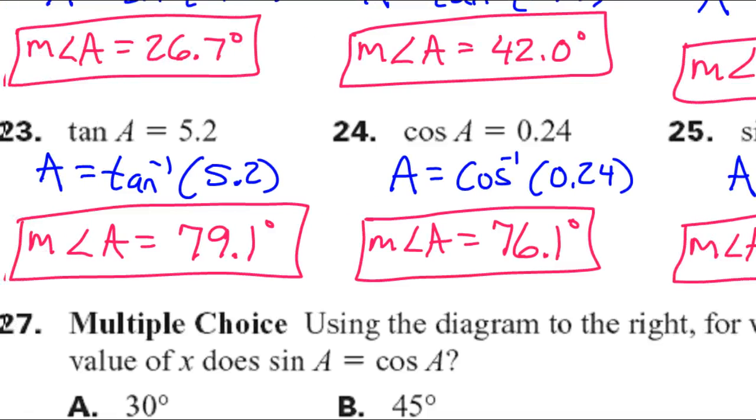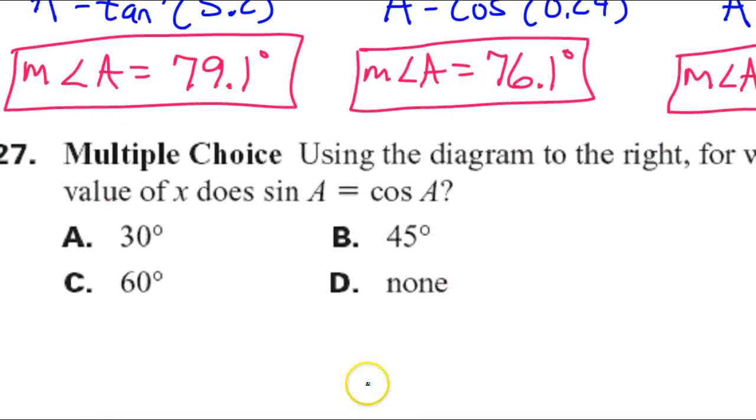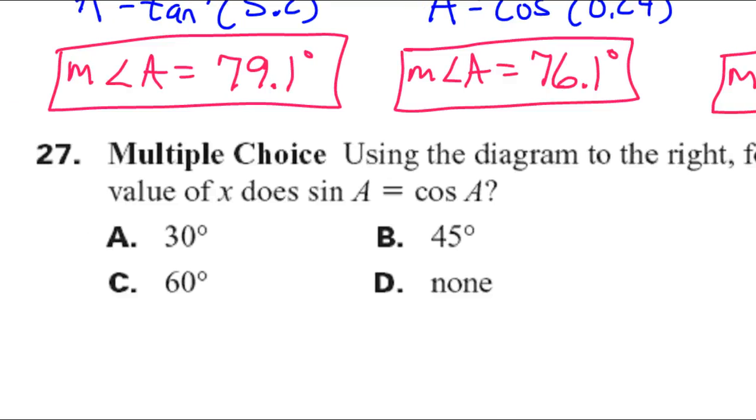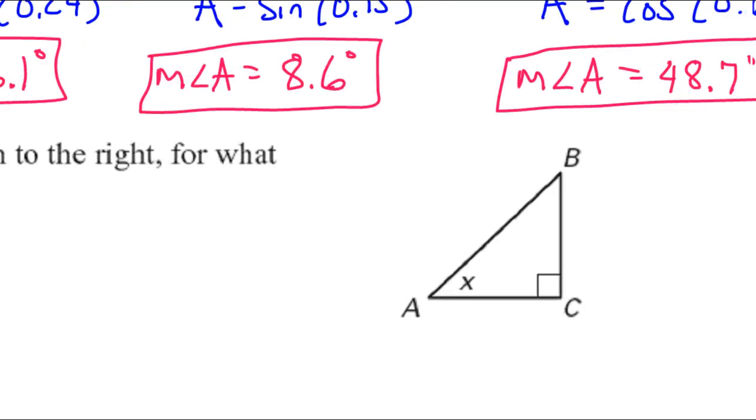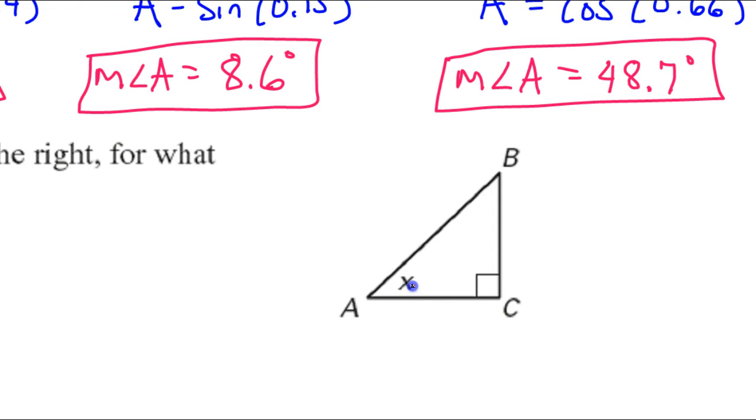All right, two more problems. Hopefully these will be a little bit more of a challenge. We'll put a little thought into it, maybe. Multiple choice. Using the diagram at the right, for what value of x does the sine of angle A equal the cosine of angle A? Okay, let's think about that. All right, what value of x? All right, let's talk about the sine of angle A and the cosine of angle A. All right, let's pretend that we do not know what angle x is right away. So, let's have some variables in here.